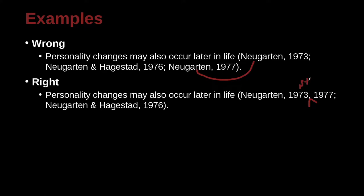So 1973 is first and 1977 is second because 1977 is later. The next issue is we have Neugarten alone and Neugarten with Hasgard. Which goes first? Here we have a semicolon — remember, semicolons go between different authors. Neugarten alone has nothing after the name, so it's empty. That will be earlier than using the H, because H goes after empty. If something is empty, that's the same as being before A or before zero.